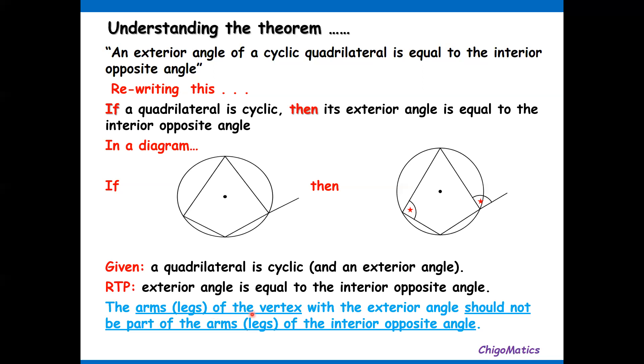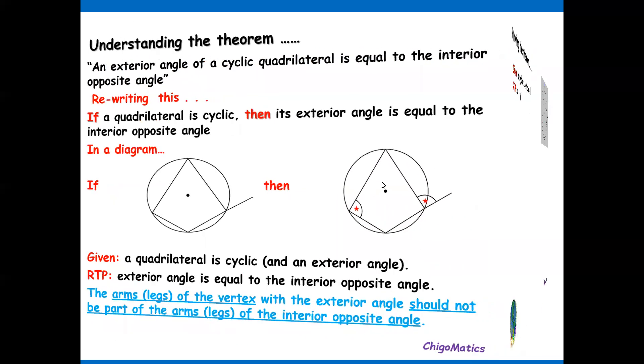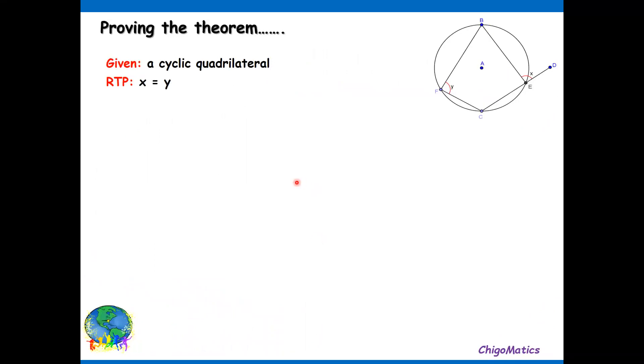The arms or legs of the vertex with the exterior angle should not be part of the arms or legs of the interior opposite angle. If you look at this exterior, this is the first leg and this is the second. So these legs forming the exterior should not be part of the interior opposite. So this one has nothing to do with the two legs of the exterior angle.